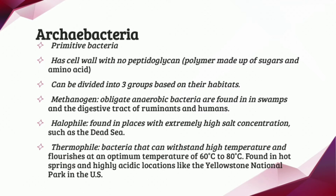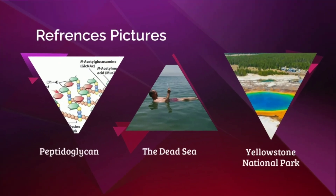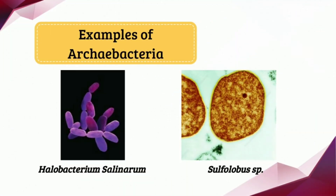Lastly, we have Thermophiles. From the word thermo, we know it means something related to temperature. Thermophiles are bacteria that can withstand high temperatures and flourish at an optimum temperature of 60 to 80 degrees. Thermophile bacteria are usually found in hot springs and highly acidic locations like Yellowstone National Park in the US. The examples of Archaebacteria are Halobacterium salinarium and Sulfolobus species.